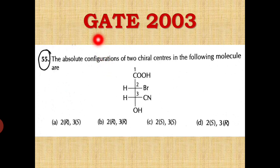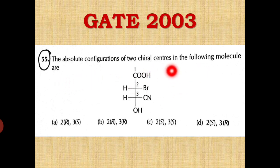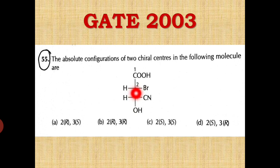Another question from the GATE 2003 paper: the absolute configuration of the two chiral centers in the following molecule are. The molecule is given; carboxylic acid gets first priority, then we number carbons 2, 3, and 4. Find the absolute configuration at carbon 2 and carbon 3. You can try it yourself and pause the video.